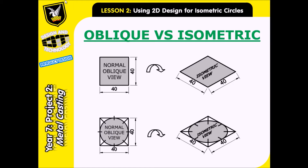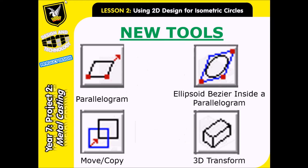If you're going to do that by hand you'd use an ellipse template. For what we're going to do on the computer we need to use the ellipse tools, and just like in the last exercise we're going to use the parallelogram tool, the ellipsoid bezier tool, move and copy, and also the 3D transform.